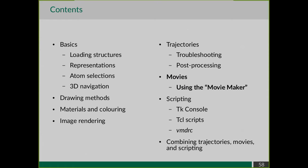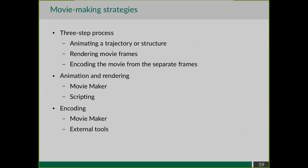Now we'll move on to making movies with VMD. Making a movie in VMD is a three-step process. First, decide what you want to animate - a trajectory playing in time, a single structure rotating, or both? Second, render movie frames - this is frame-by-frame animation, generating perhaps a thousand frames at different time points or rotation angles. Third, encode these separate frames into a final movie.